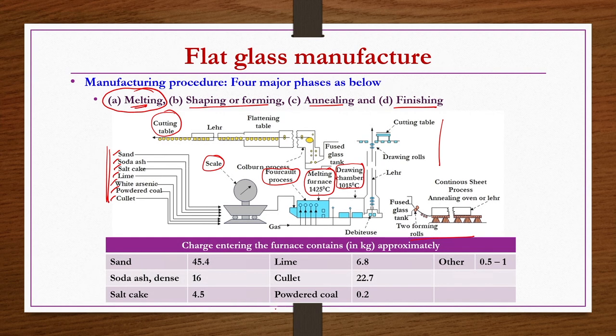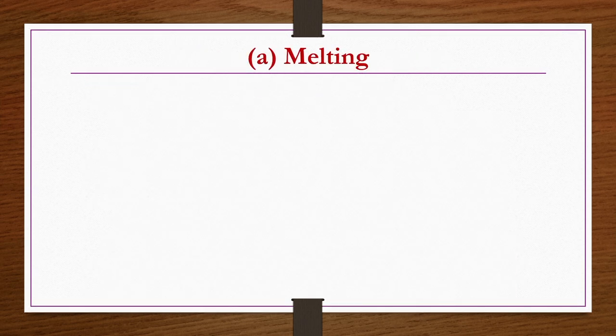For the flat glass manufacture, the charge entering the furnace consists of approximately: sand 45.4 kg, dense soda ash 16 kg, salt cake 4.5 kg, lime 6.8 kg, cullet 22.7 kg, powdered coal 0.2 kg, and other ingredients 0.5 to 1 kg. Melting is done in two different types of furnaces: pot furnaces and tank furnaces.